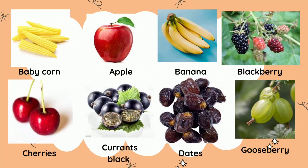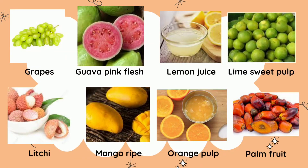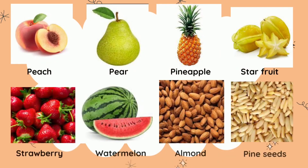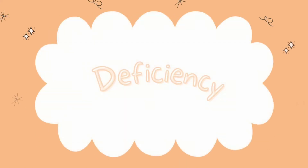Additional low-sodium foods include baby corn, apple, banana, blackberry, cherries, currants, black dates, gooseberry, grapes, lemon juice, lime, sweet pearl, lychee, mango ripe, orange pulp, palm fruit, peach, pear, pineapple, star fruit, strawberry, watermelon, almond, pine seeds, sunflower seeds, walnut, and sugarcane juice.